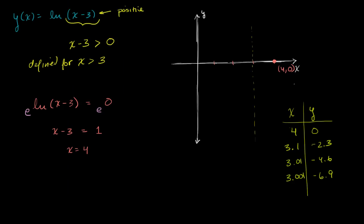So as you see, as we're getting closer and closer to 3, we're getting more and more and more negative values. Let me just plot this right over here.